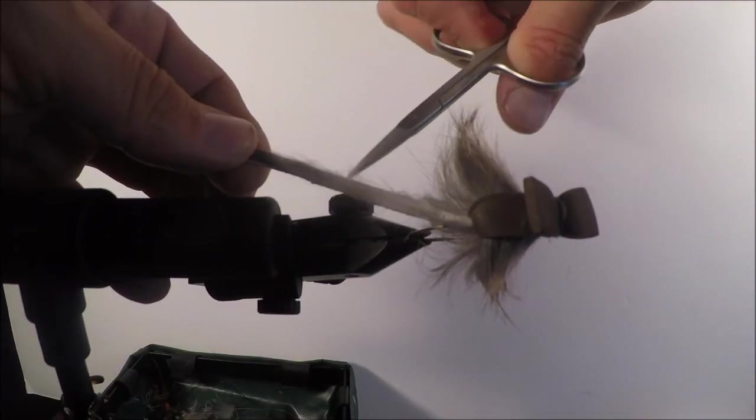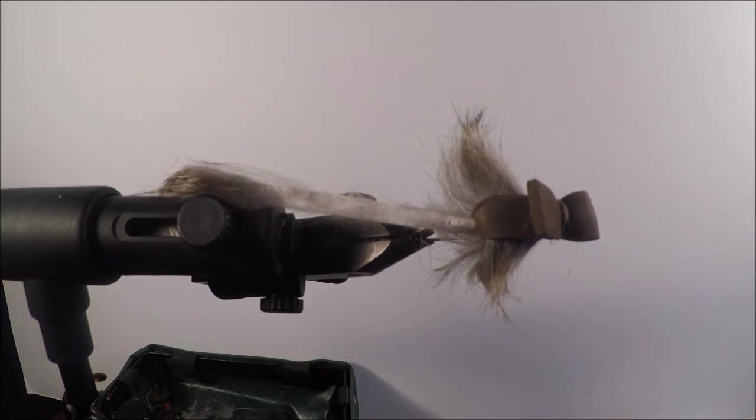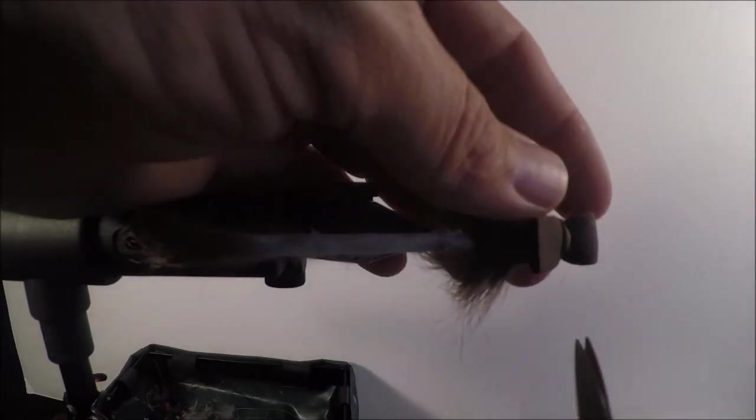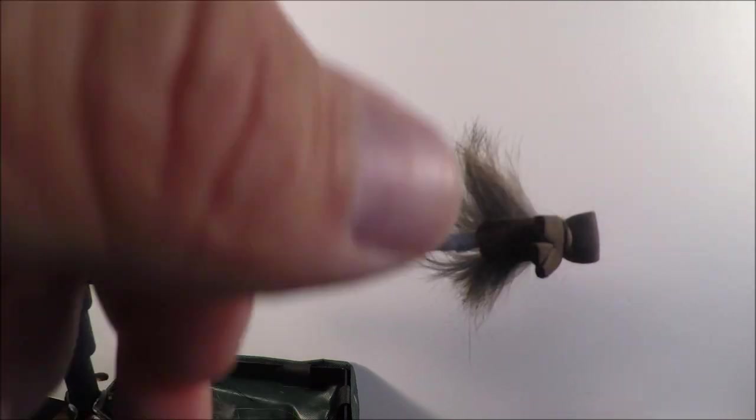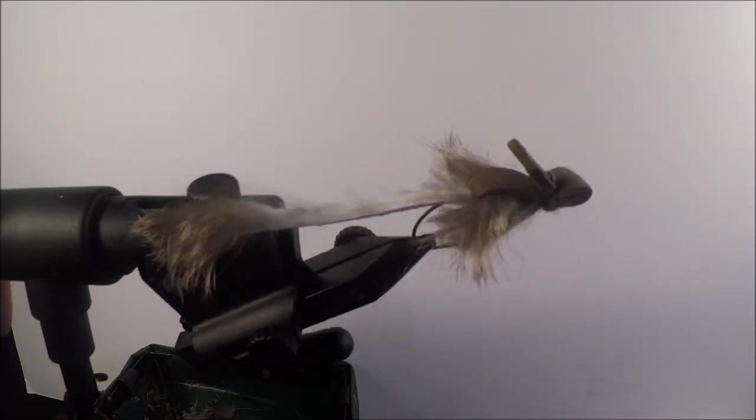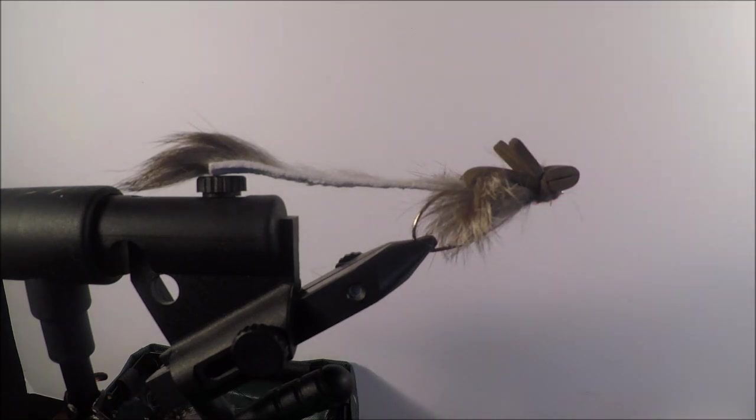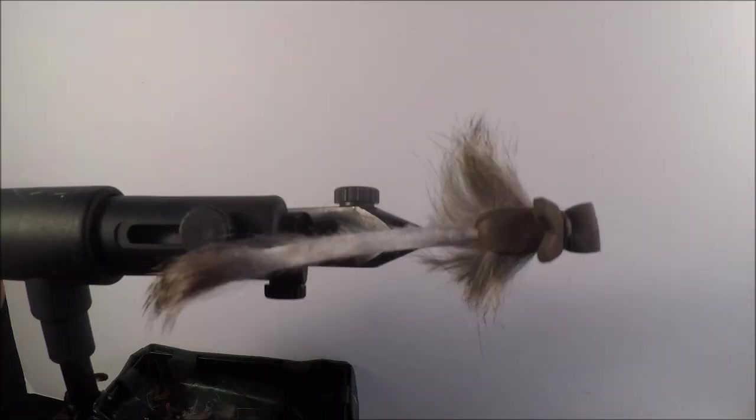So there you go. That's just about it. There's your mouse fly. You can scale it down for smaller fish. Make it bigger for bigger fish. Like I said, it's a combination between a Morrish mouse and a Master Splinter. There's your cute little ears. Now go throw it at your girlfriend or your wife and see if they jump. And if they do, by golly, you did a good job.